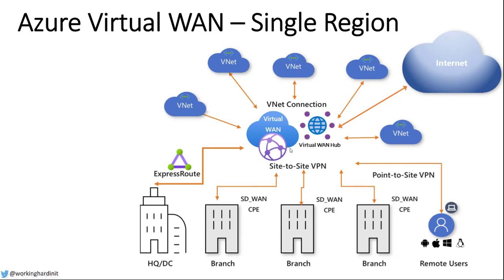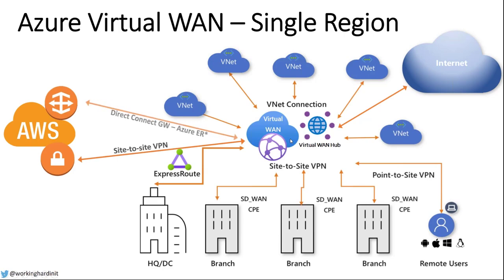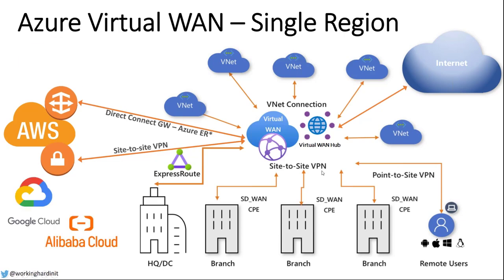You also have to think a bit outside the Microsoft world — once you have connectivity to a hub, nothing stops you from doing a site-to-site VPN to AWS, or using Azure ExpressRoute with a telco that connects the two together. You can hook up Google Cloud, Alibaba, or a managed service provider's private cloud run by a partner. It's all possible.